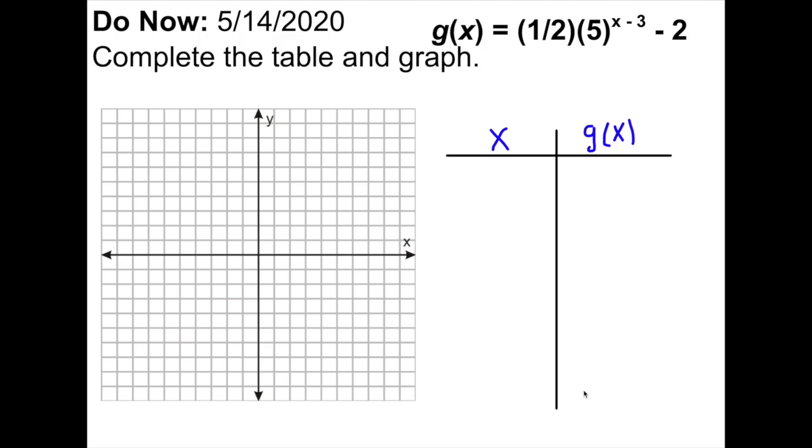Alright, so in this do now, I've got the function here, g of x equals one half times five to the power of x minus three minus two. It could also be written like this. The x minus three is your exponent. So what I want you to do, as we've been doing for the past few days, is pause the video, complete the table and graph, and then when you're ready, unpause, and you can see what I got.